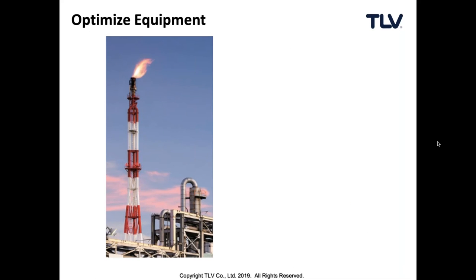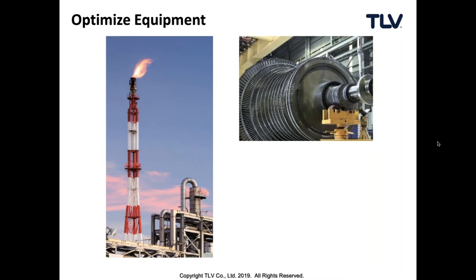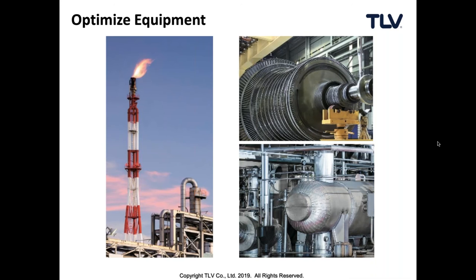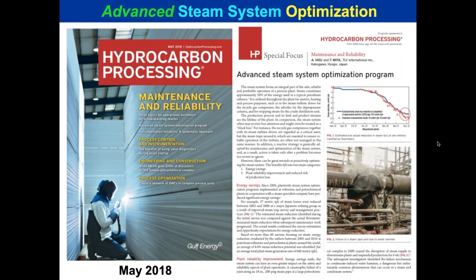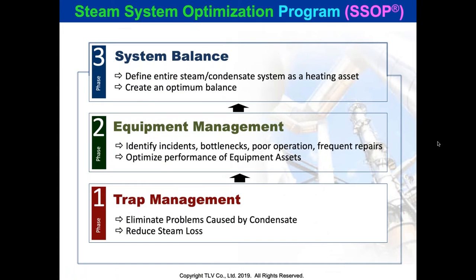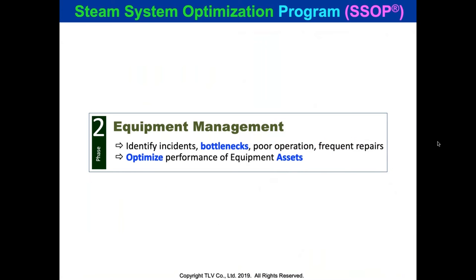Today we're going to talk about optimizing equipment: flares, turbines, reboilers, and cokers. If you want to read about advanced steam system optimization, there's an article by Alan Ho and Tetsuya Mita published in Hydrocarbon Processing on our website. We normally discuss three phases of steam system optimization, but today we're focusing on equipment management — specifically identifying incidents, bottlenecks, and how to optimize asset performance.